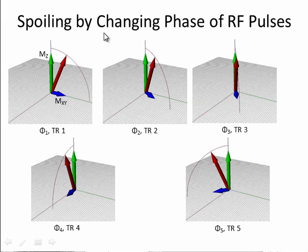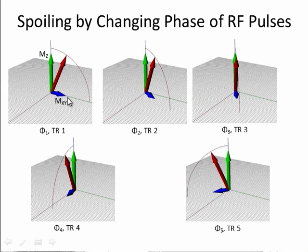How would we spoil by a change of the phase of the RF pulses? The important thing is to not confuse the phase of the RF pulse with the flip angle of the RF pulse. What I'm showing by the red arrow is a flip angle of about 20 degrees. For the first TR, the phase of the RF pulse resulted in the transverse magnetization pointing along the Y axis.